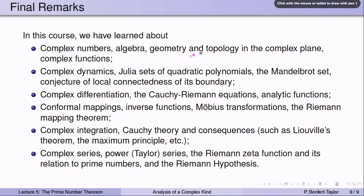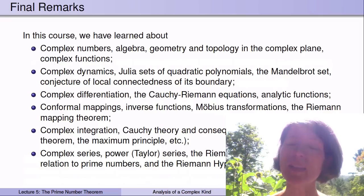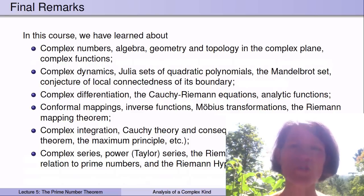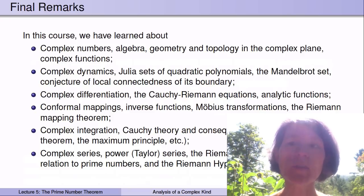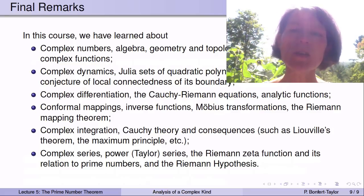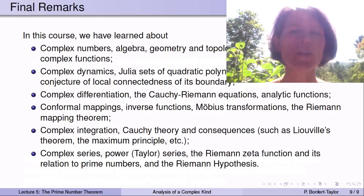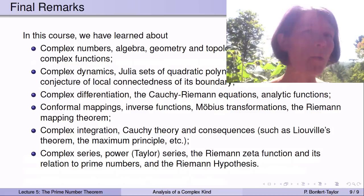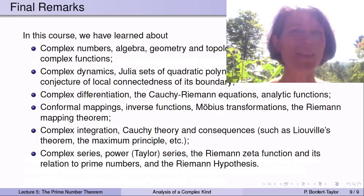We have now reached the end of this course. In it we learned about complex numbers — the algebra, geometry, and topology of the complex plane — and about complex functions. We studied complex dynamics, Julia sets of quadratic polynomials, and the Mandelbrot set, including the conjecture of local connectedness of its boundary. We studied complex differentiation, the Cauchy-Riemann equations, analytic functions, conformal mappings, Möbius transformations, and the Riemann mapping theorem. We learned about complex integration and Cauchy theory, and finally complex series including power series, the Riemann zeta function, and its relation to prime numbers and the Riemann hypothesis. I hope you enjoyed this course.